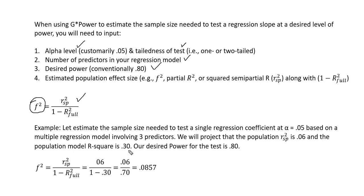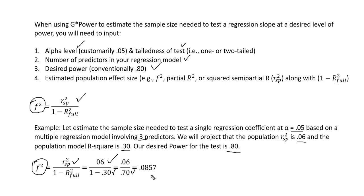We'll stick with a model R-square of 0.30, alpha of 0.05, and a model with three predictors. We project the population squared semi-partial correlation to be 0.06, and our power is 0.80. We compute F-squared by taking 0.06 divided by 1 minus 0.30, which is 0.70, giving us an F-squared value of 0.0857.